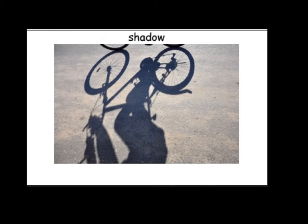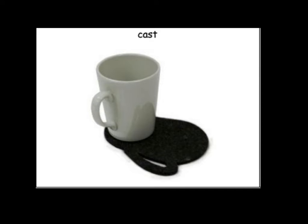This is a shadow. We've talked a lot about shadows. This story is about a shadow, so I just wanted to show that again. This word is in the story: cast. Cast is how a shadow is made. When the light shines on an object, we say it casts a shadow. You'll notice that in the book.